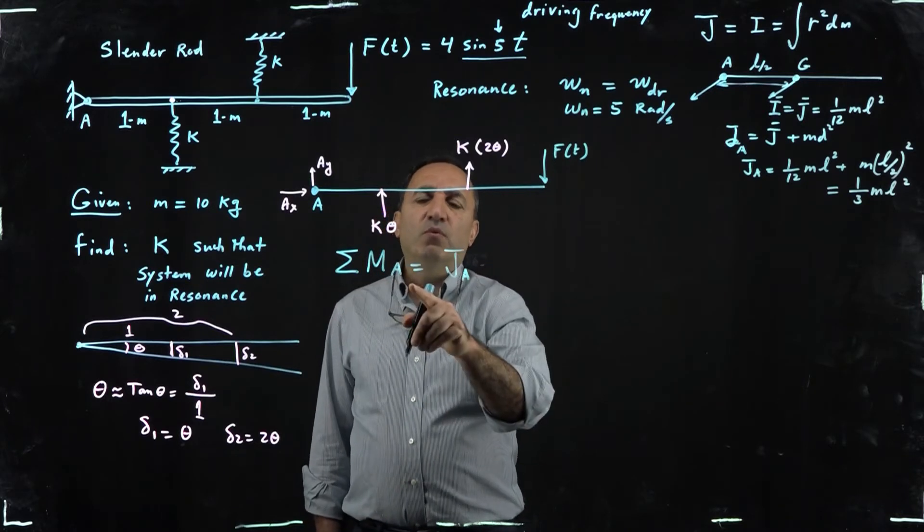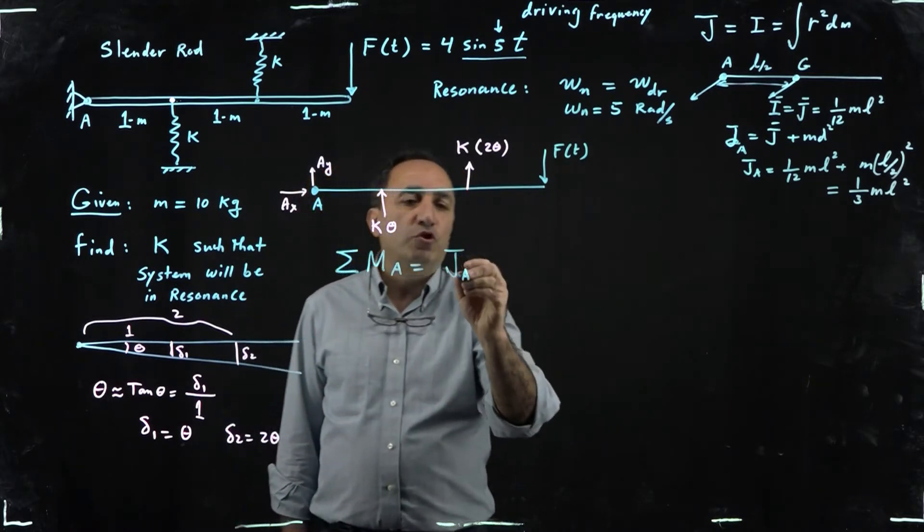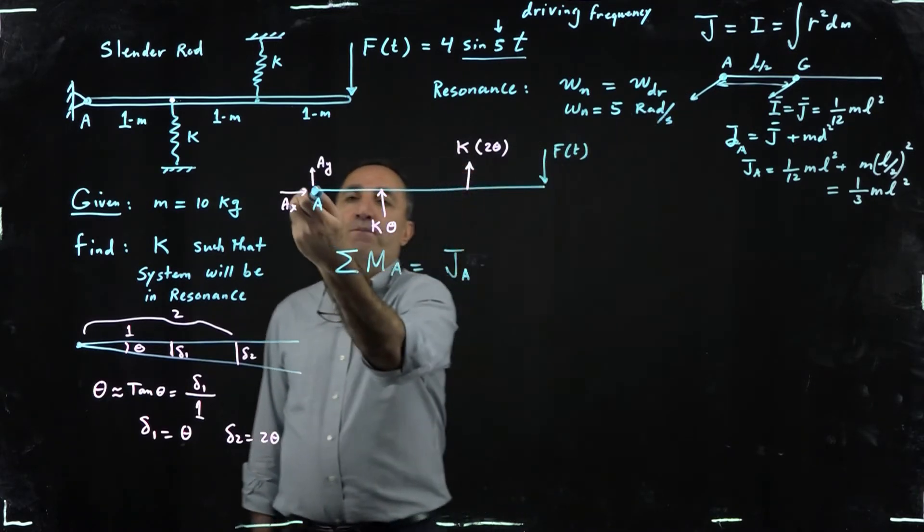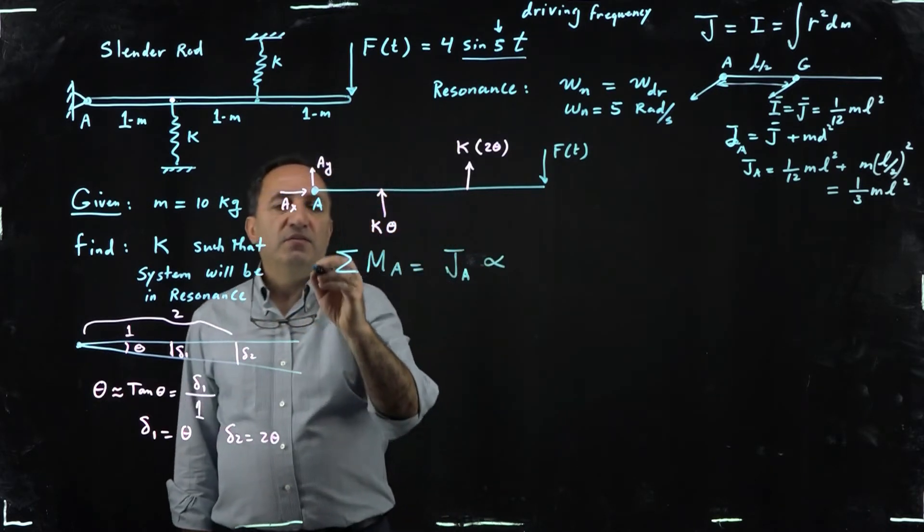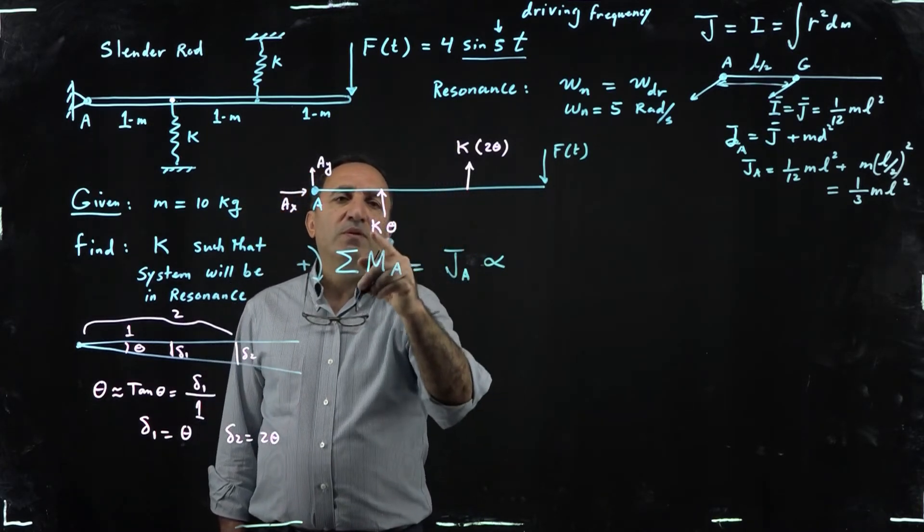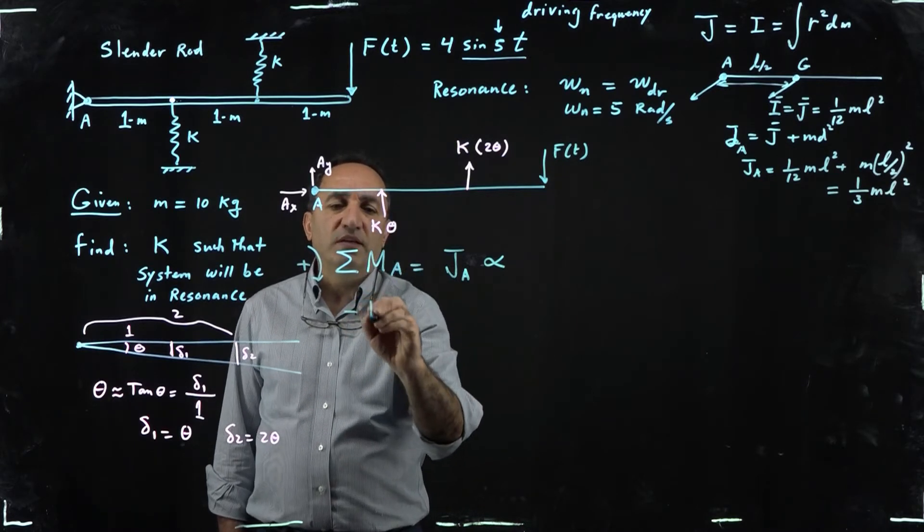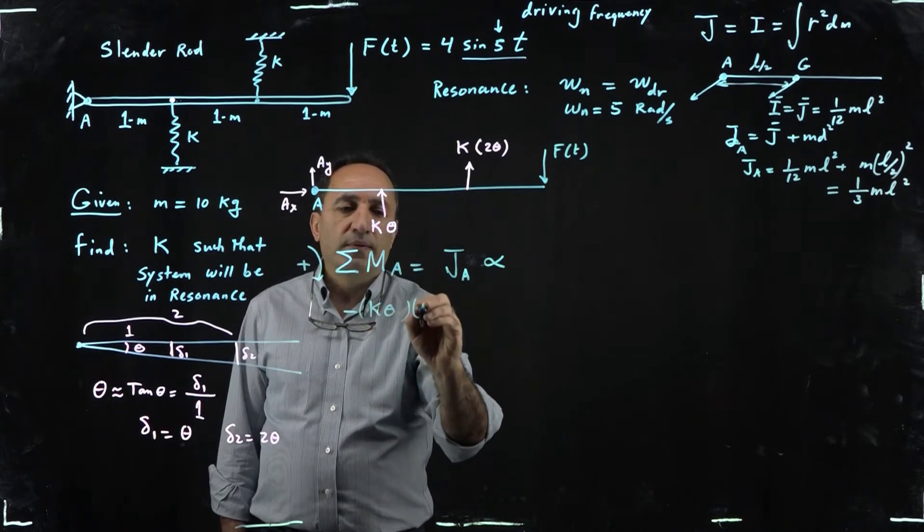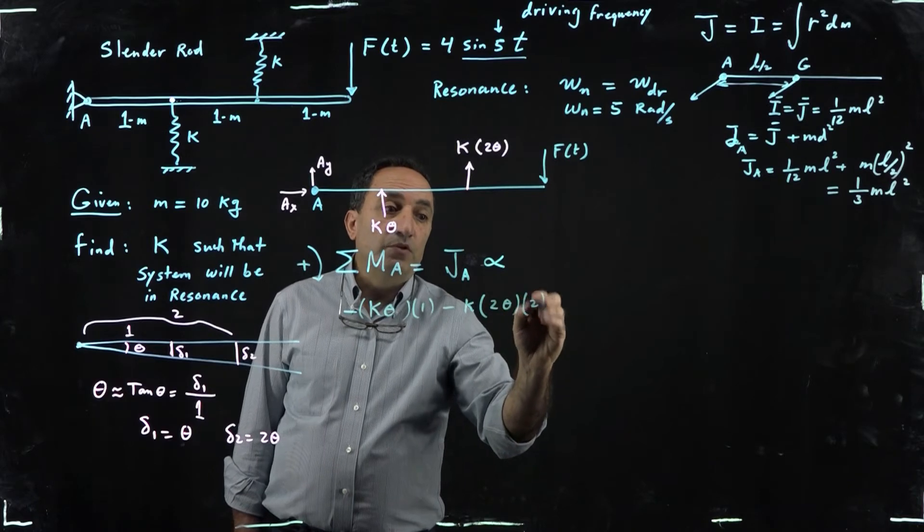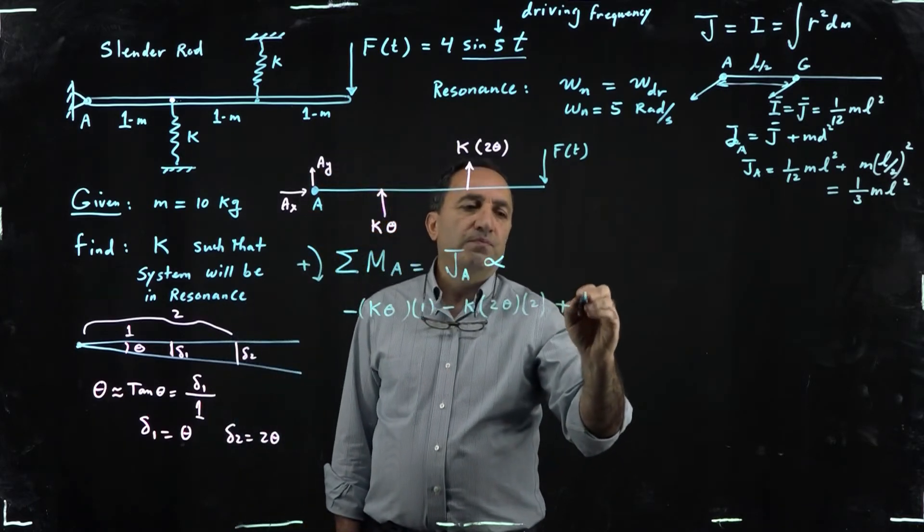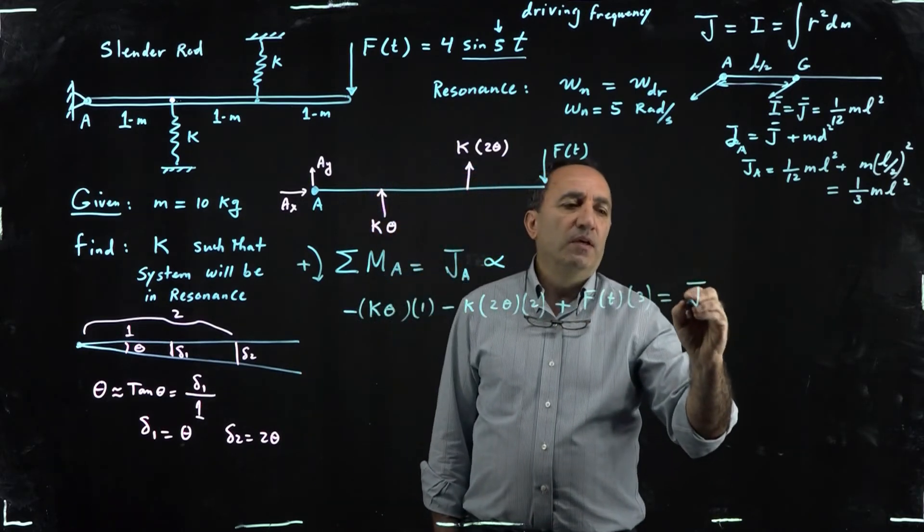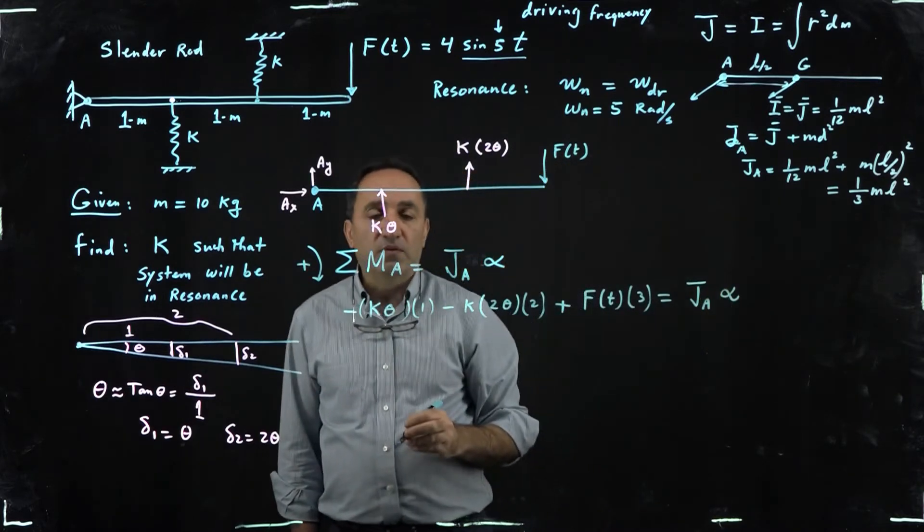Okay, let's get back to here. So sum of the moment taken about the pivot point should be equal to J sub A, in other words the mass moment of inertia through this axis, right, times alpha. And since the disturbance due to the force is clockwise, we take that to be positive. Look at your free body diagram, the moment of K theta is K theta times one, that's negative, right. The moment of this one is also negative because it's going counterclockwise, but remember you have to multiply it by two. And the moment of the force is times three, equal J sub A times alpha.